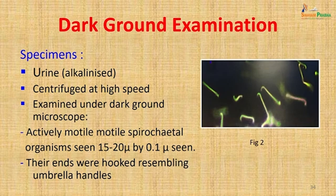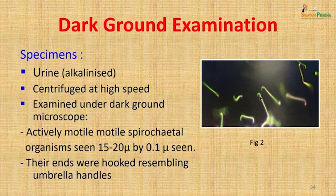A urine sample was collected, alkalinized, centrifuged at high speed, and examined under the dark-ground microscope. Actively motile spirochetal organisms were seen, measuring 15–20 microns by 0.1 micron, with hooked ends resembling umbrella handles. These are characteristic of Leptospira as seen under the dark-ground microscope, giving a strong indication that we were dealing with leptospirosis.